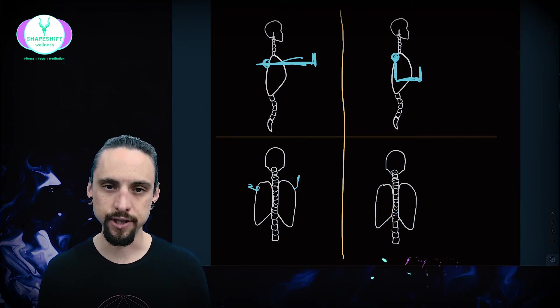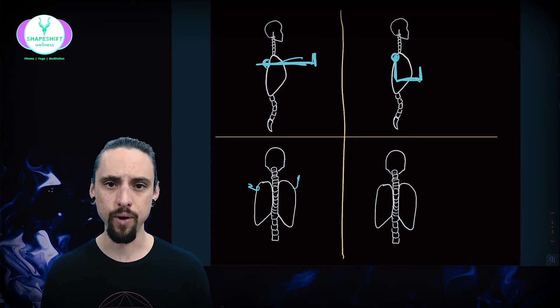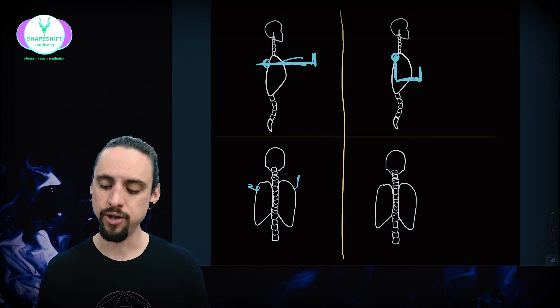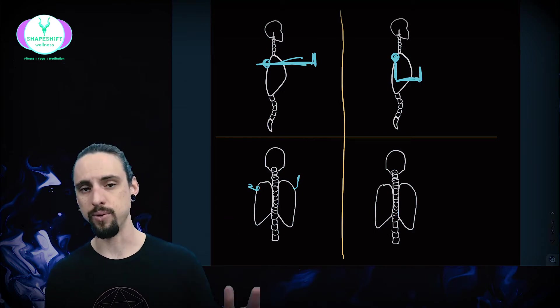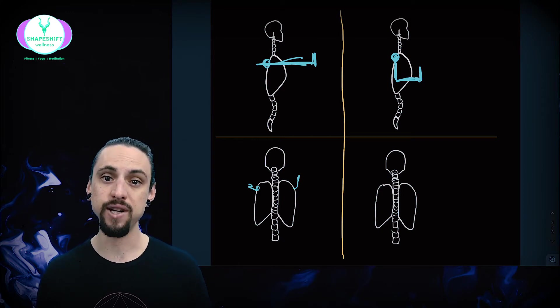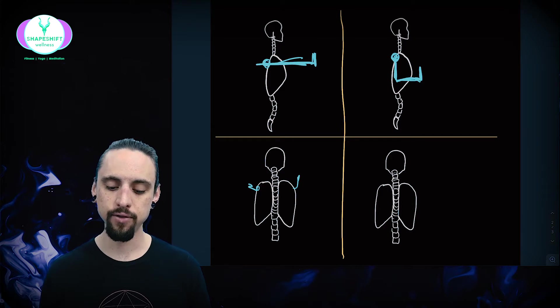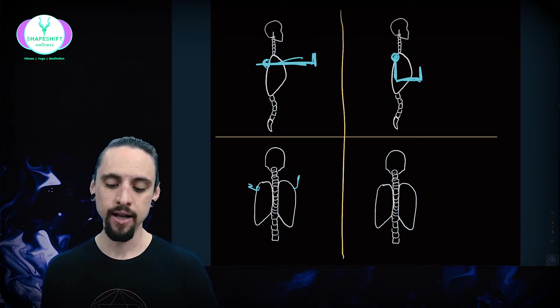If we apply the principles of tensegrity or regional interdependence, if we understand the concept of scapulohumeral rhythm, then we understand that where the arms go, the shoulder blades follow, generally speaking. If the arm reaches forward, the shoulder blades go forward. If the arms reach forward and up, the shoulder blades go forward and up. If the arms reach back, the shoulder blades go back.